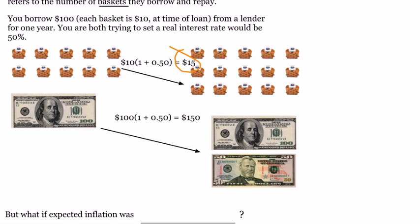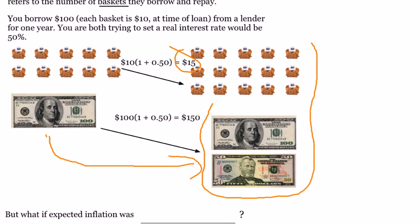But in reality, we borrow and lend money. And suppose there's no inflation during the period the money is borrowed and lent. Then you borrowed $100. If the price of baskets remain $10, you can simply pay back the lender $150.